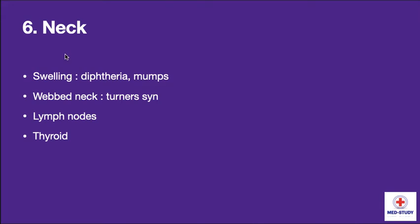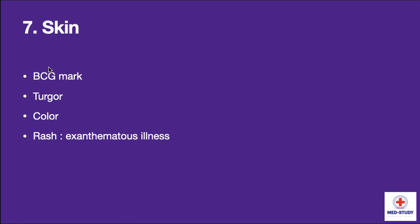Now coming to neck. We have to see for swelling as seen in diphtheria and mumps. We have to look for webbed neck as seen in Turner's syndrome. We have to check for lymph node enlargement and examine the thyroid for any enlargement. Now coming to skin — we have to look for BCG mark, turgor of the skin, color of the skin, and rash as seen in exanthematous illness. Turgor determines dehydration status, and color allows us to rule out hyperpigmentation or hypopigmentation.